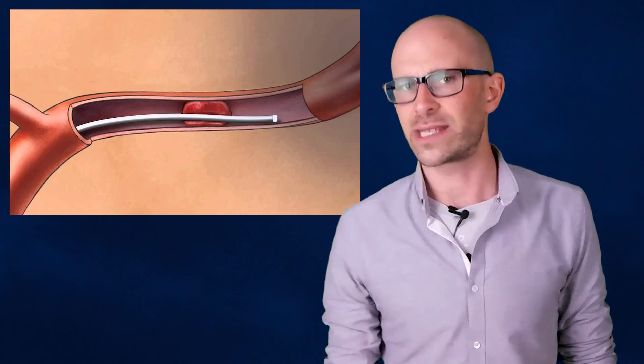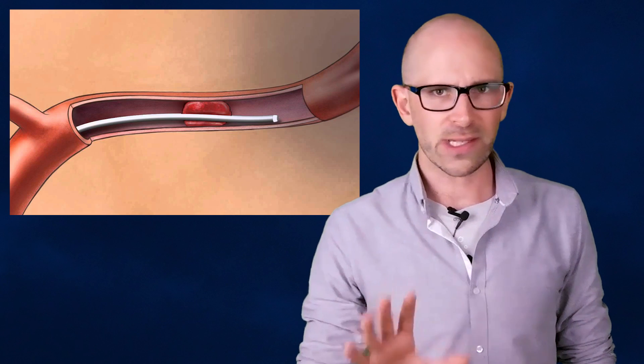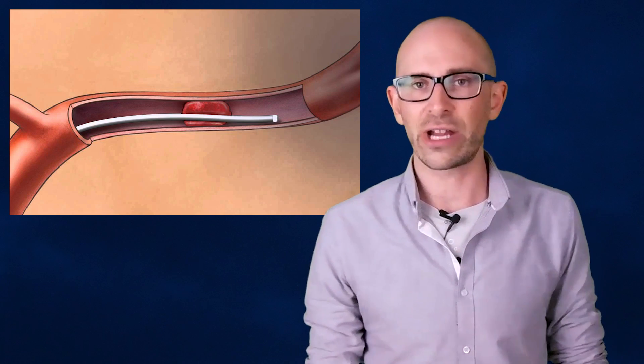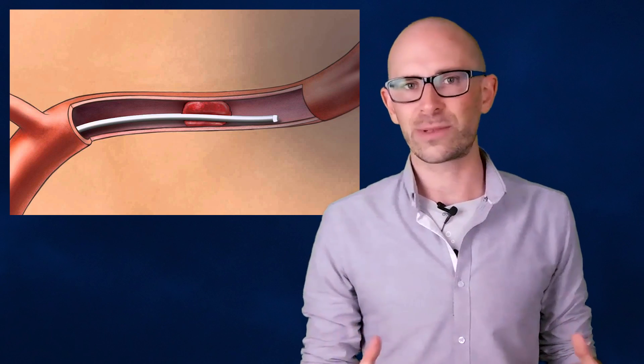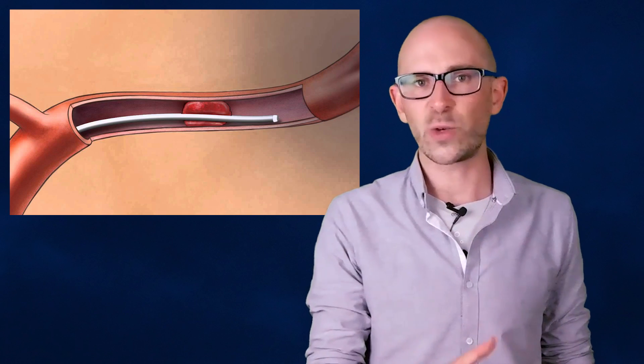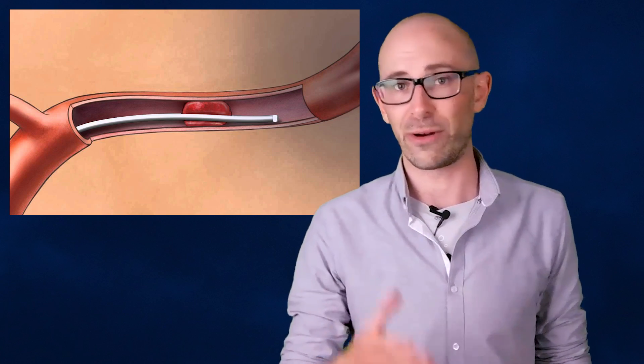Treatment for ischemic strokes involves removing or reducing the blockage. If this is not done quick enough and the cells in that area of the brain die, the only option left is physical therapy to try to increase the function of the body area affected. If doctors have the opportunity to treat the stroke in a timely manner, there are two therapies they can try.